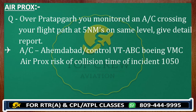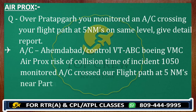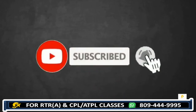'Ahmedabad Control, Victor Tango Alpha Bravo Charlie, Boeing, VMC, AIRPROX risk of collision. Time of incident: 1050. Monitored aircraft cross our flight path at five nautical miles near Pratap Gurd.' Then give position in terms of radial and DME from the chart, flight level from the question paper, and TAS — which is 300 knots for Boeing or Airbus.